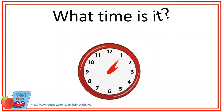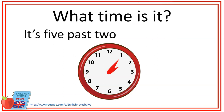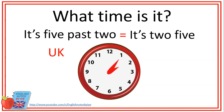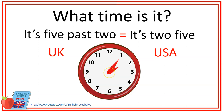For example, what time is it? In British English, we will say it's five past two. And in American English, we will say it's two five. So in American English, we only mention the numbers — two, five. It is a little bit easier, but both expressions are correct.